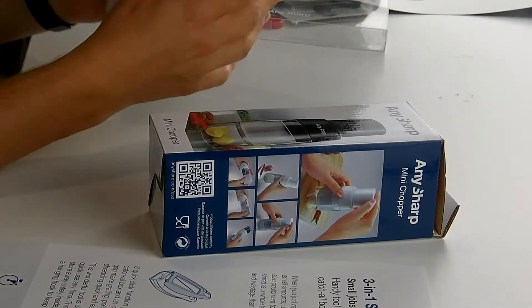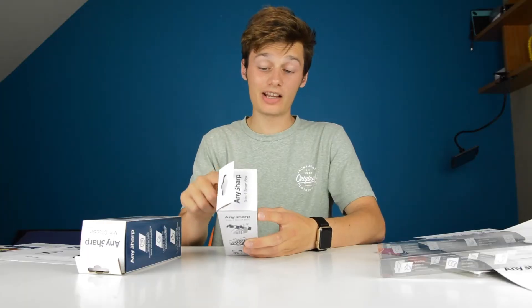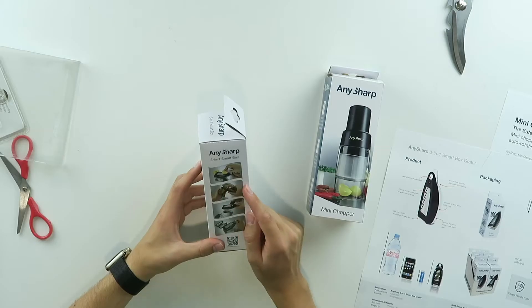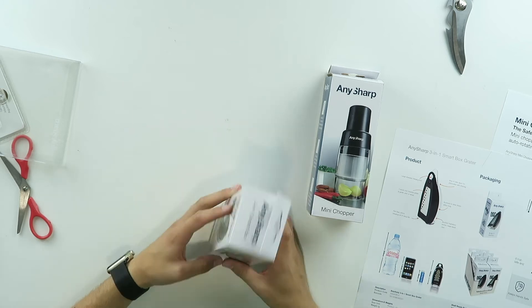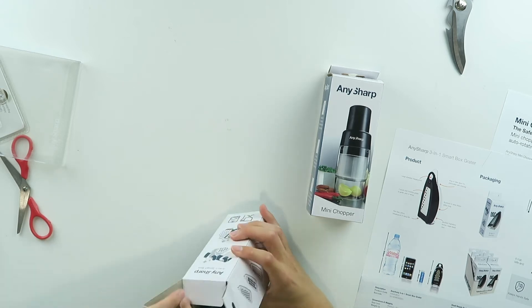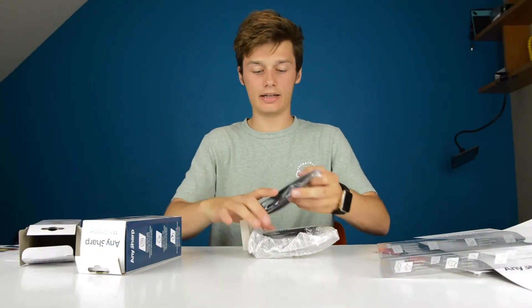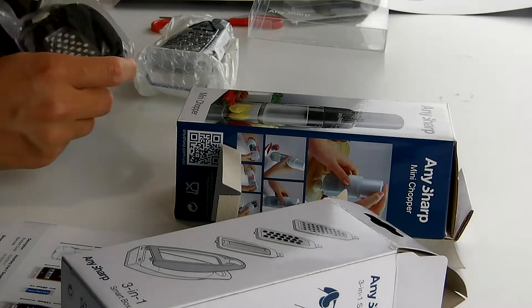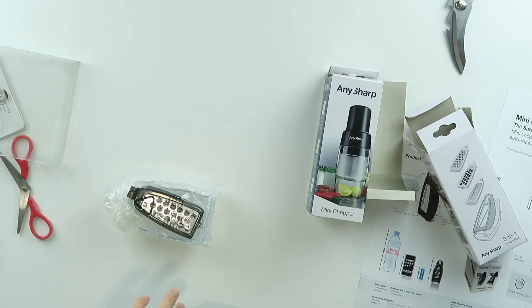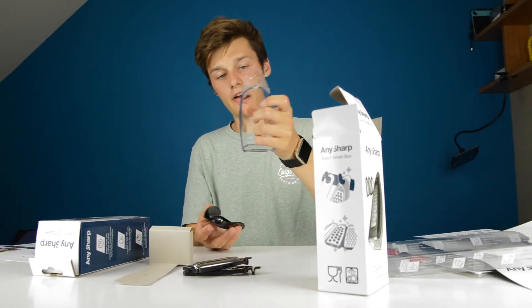Next we have the 3-in-1 smart box so you can grate cheese, peel a potato for example, scrape off chocolate for in your coffee and it's dishwasher safe again as well. So pretty cool. I'm not really the guy who likes to work in the kitchen, but this is going to be for my mom. She's probably going to enjoy these.